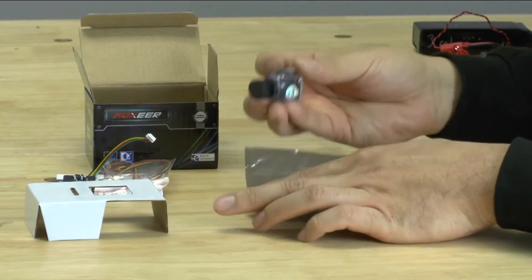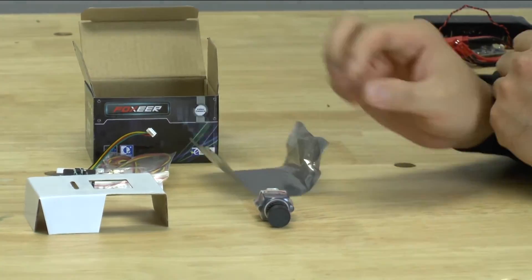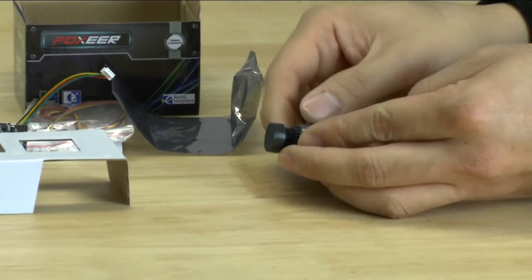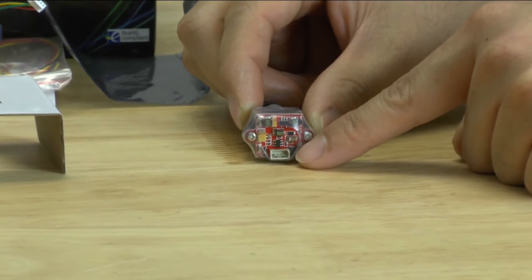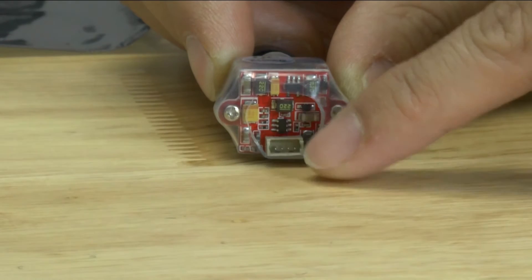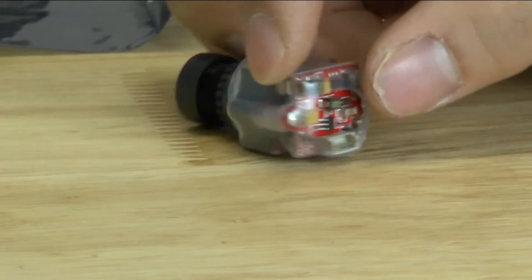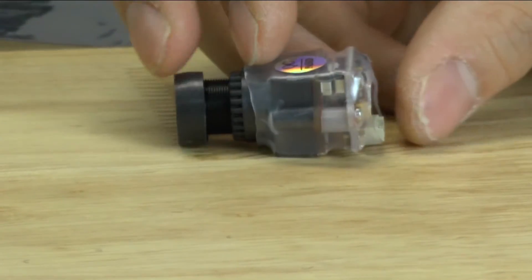So if you take this out, this is the miniature version of the HS1177. It's upside down right now. You'll notice that on the miniature version, the inputs are at the bottom. They don't make one where the inputs on the top right now. So it's really small. It's basically as small as it can get.